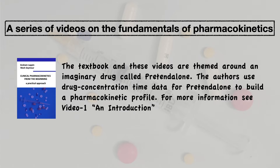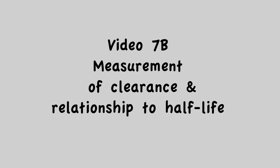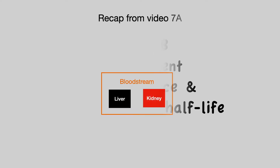Drug concentration time data are used to build a pharmacokinetic profile. If you want more information on how this works, see Video 1, An Introduction. This is Video 7b: Measurement of Clearance and Relationship to Half-Life. A quick recap from Video 7a — we know that the principal organs of drug elimination are the liver and kidneys.